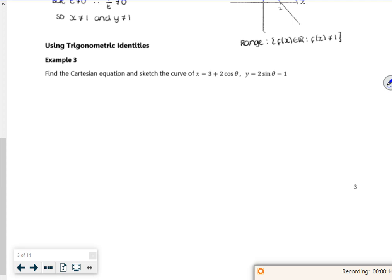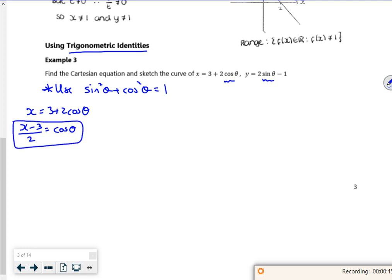This one's using trig identities and if you look it's got sine and cos in there. So I'm going to use sin²θ + cos²θ = 1. I need to rearrange this equation. If I take away the 3 and divide through by 2, I can replace the cos θ. So I've got an equation to replace the cos θ.